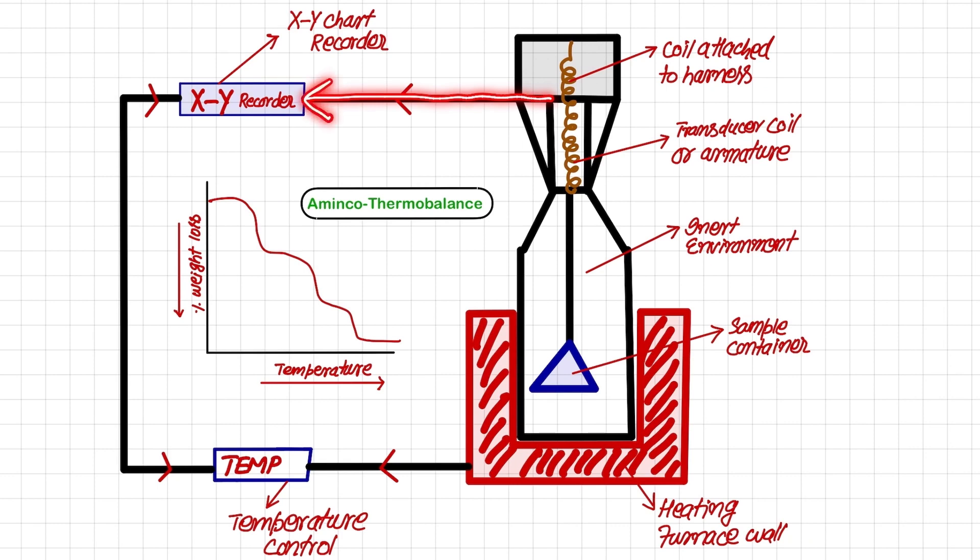That corresponding amount of current is fed to the XY chart recorder which will then make a graph. Similarly, the heating information is sent to the temperature control and this is further connected to the XY chart recorder. There are two types of information that this XY chart recorder records: first information coming from the furnace about the temperature, and the information from the current generated that is directly proportional to the weight change in the sample.